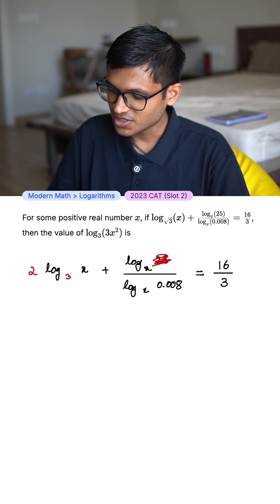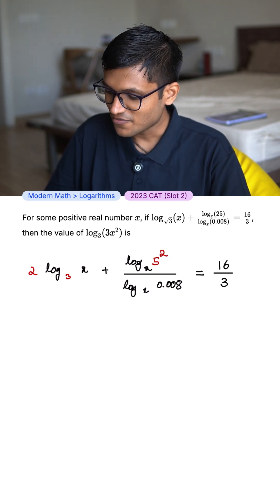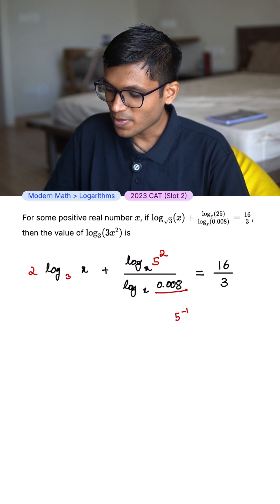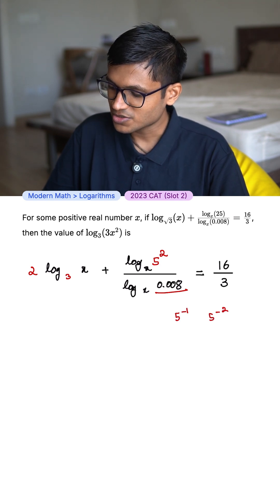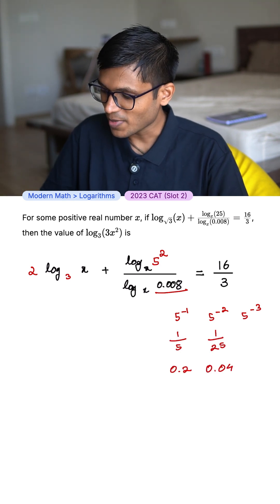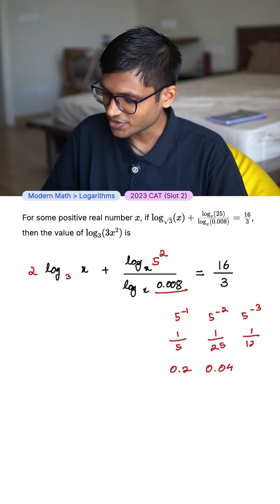Now 25 is nothing but 5 to the power 2 and we have decimals over here. It probably might be 5 to the power minus 1, 5 to the power minus 2, 5 to the power minus 3. Just put this in the calculator and check. 5 to the power minus 3 is 1 by 125 which then becomes 0.008.